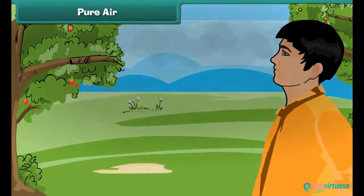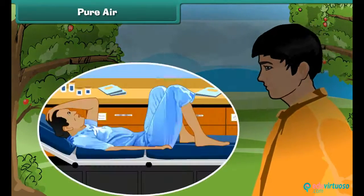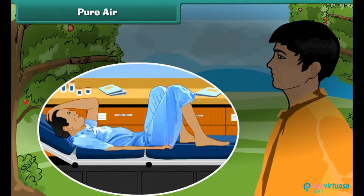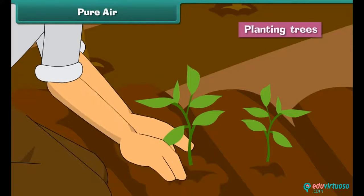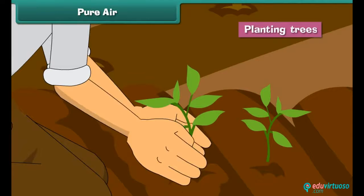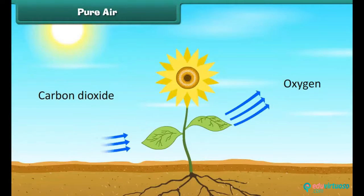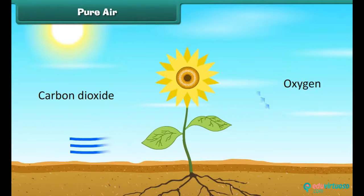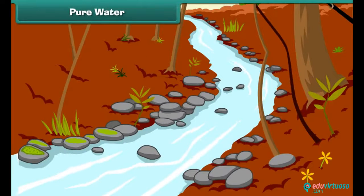Breathing polluted air can lead to asthma, bronchitis, etc. We can solve the problem by planting more trees. Trees purify air by absorbing carbon dioxide and giving out oxygen.